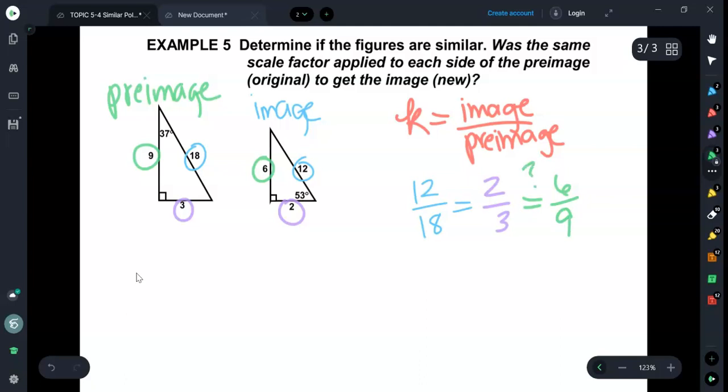So 12 goes over 18, which should give us the same ratio as 2 over 3, which should give us the same ratio as 6 over 9. Now I'm going to put question marks above these equal signs because I want to know, are they equal? The question is, determine if they are similar. Are they? Well, let's reduce all of these fractions. 12 over 18, if I reduce that, you can divide both by 6, that comes out to 2/3. 2/3 is already 2/3. And 6 over 9, if you reduce that, is 2 threes over 3 threes. So yes, these two figures are similar.